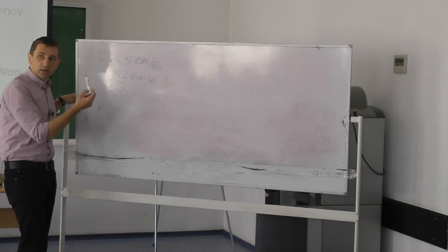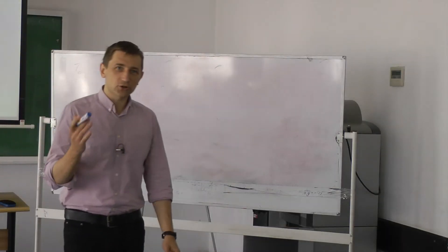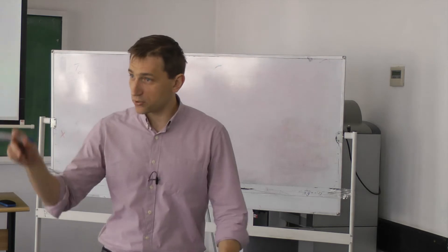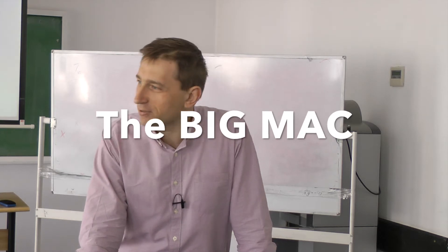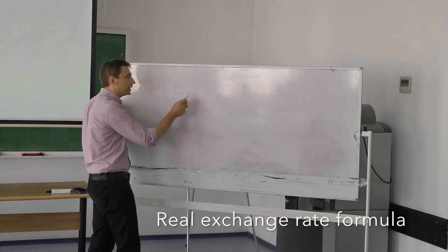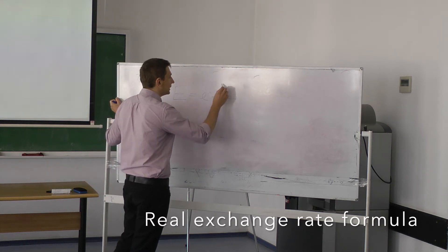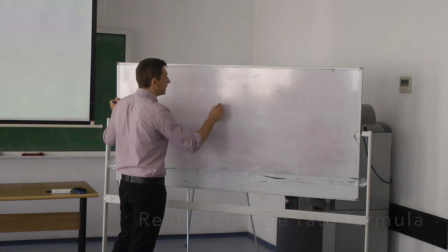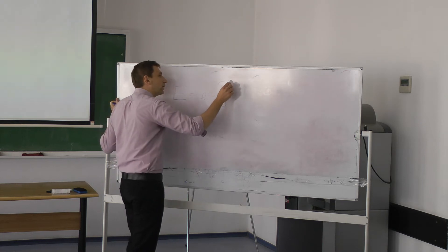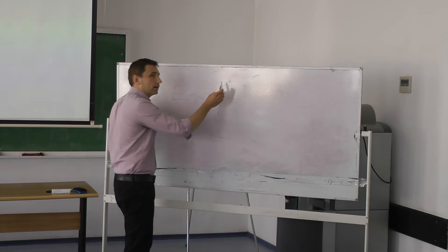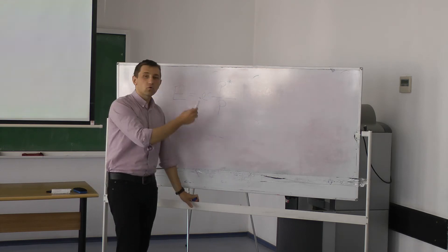A popular way of calculating real exchange rates is to use the Big Mac. If I call big E the real exchange rate, this will be equal to the nominal exchange rate multiplied by P* over P. But now I'm gonna put the foreign price here on top because I don't quote foreign units for one national - I quote national units for one foreign.